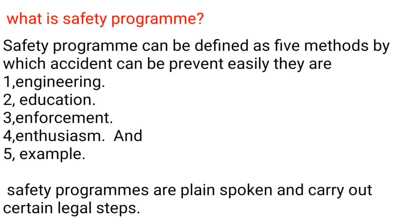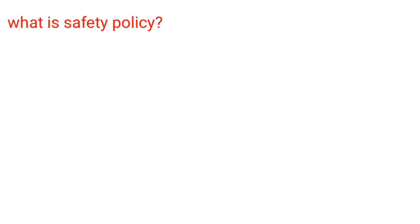What is a safety program? A safety program can be defined as five methods by which accidents can be prevented easily. They are: 1. Engineering, 2. Education, 3. Enforcement, 4. Enthusiasm, 5. Example. Safety programs are plain spoken and carry out certain legal steps.